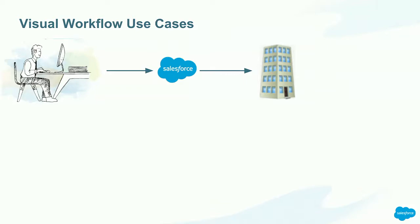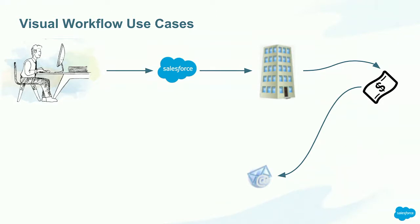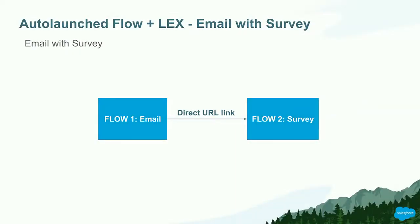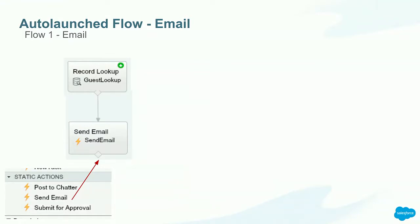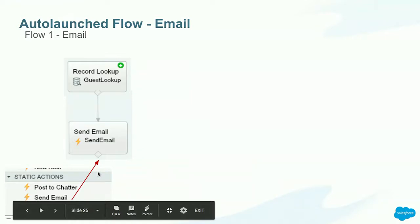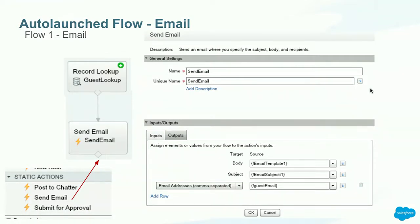Continuing with our use case: once the reservation is paid and the guest has left the hotel, we want to send an email to get their feedback. This email will contain a link redirecting the customer to a survey. We're implementing this with two flows: the first flow sends the email, and the second flow is the survey. For the first flow, we first need a record lookup to get the guest's email. Then we pass all the information to the Send Email standard action, found under the standard action section — just drag and drop it. In that action you can set up the body and subject for the email, and you can use email templates, but in this case we've used simple text variables.